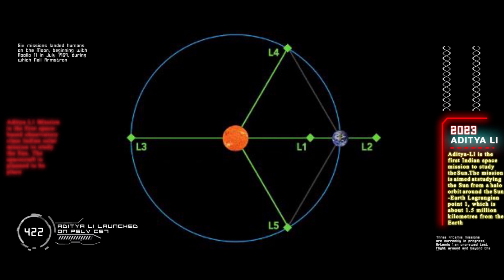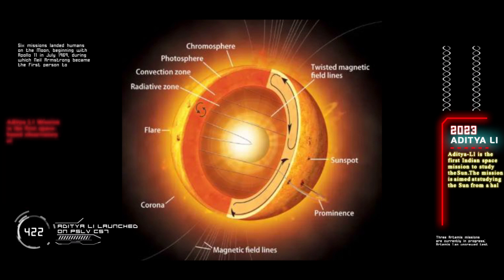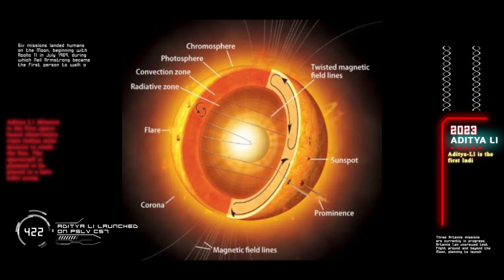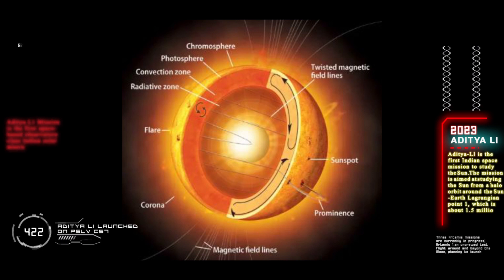The orbiter carries seven scientific instruments that will observe and study the solar corona, the outermost layer, the photosphere, the Sun's surface or the part we see from the Earth, and the chromosphere, a thin layer of plasma that lies between the photosphere and the corona.